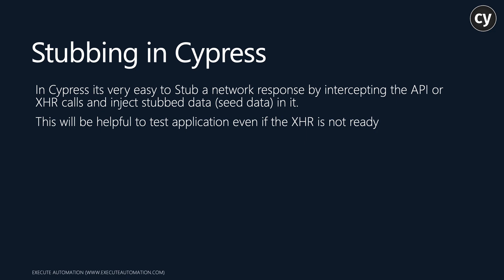In Cypress it is very easy to stub a network response by intercepting the API or XHR call and injecting stubbed data into it. This will be helpful to test applications even if the XHR or the API is not ready for you to consume within that particular UI, and this can be done in many different ways in Cypress.